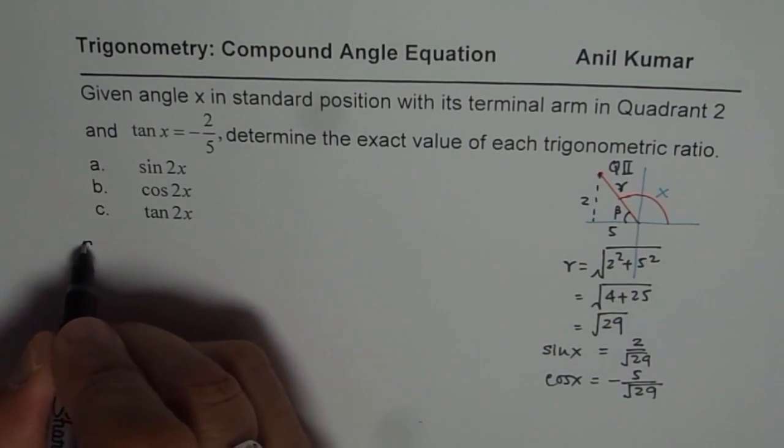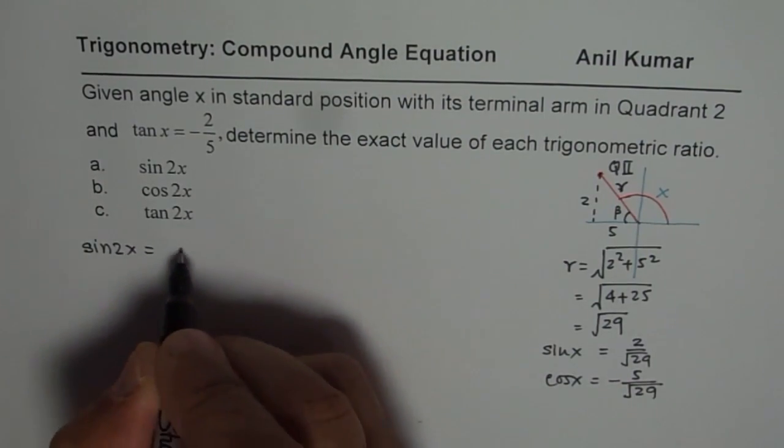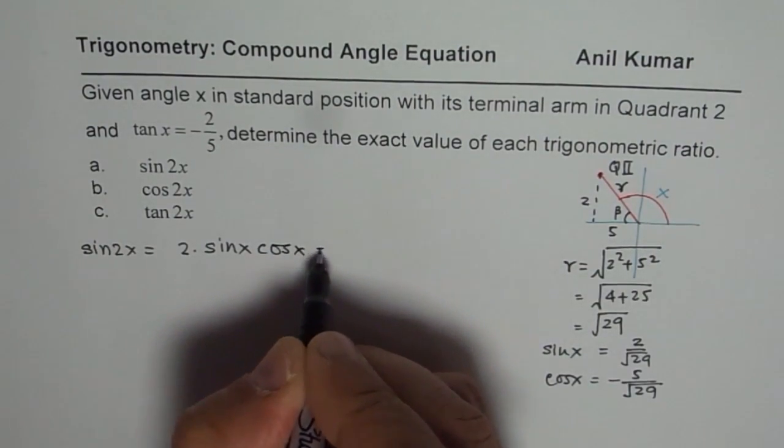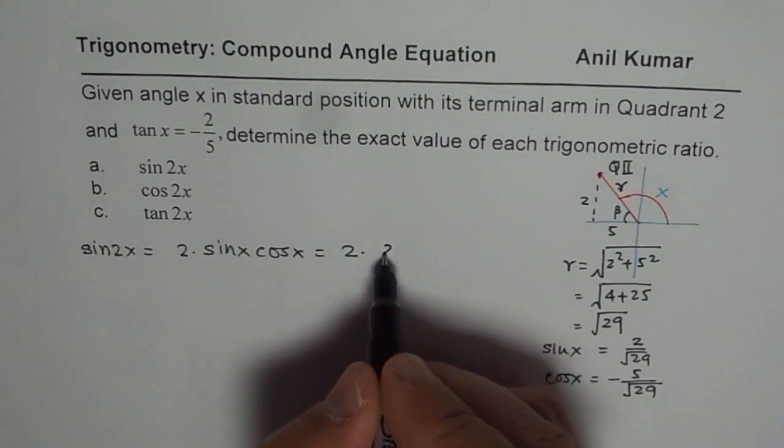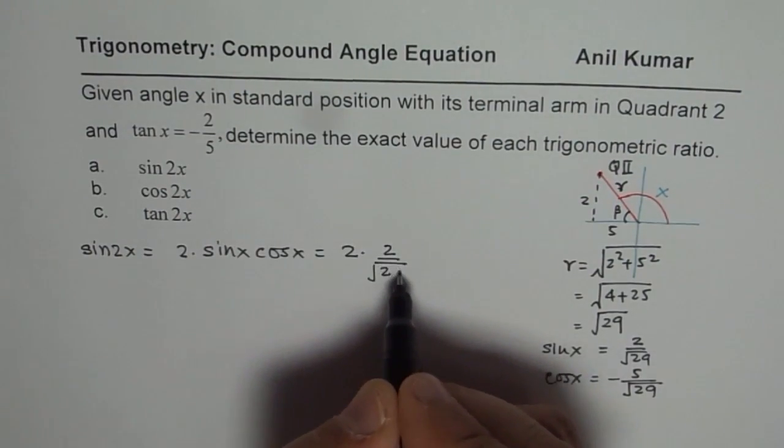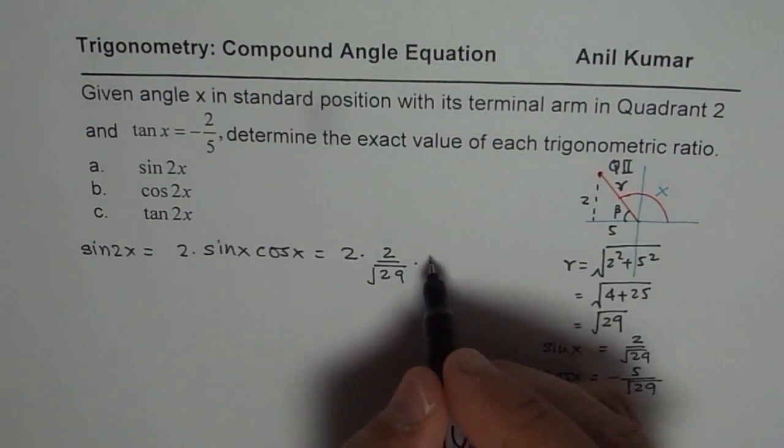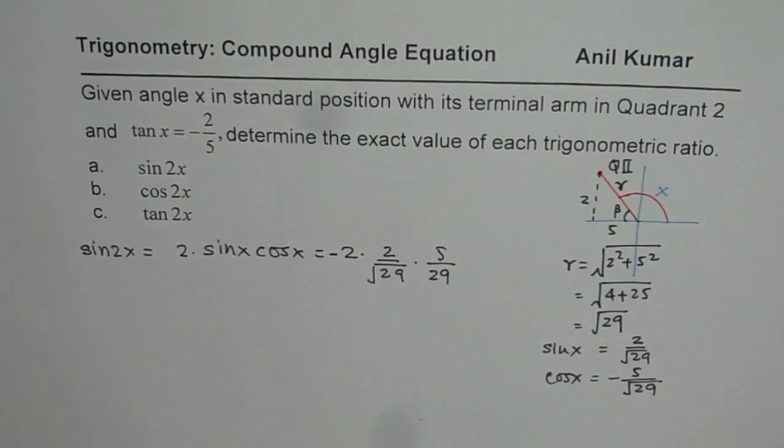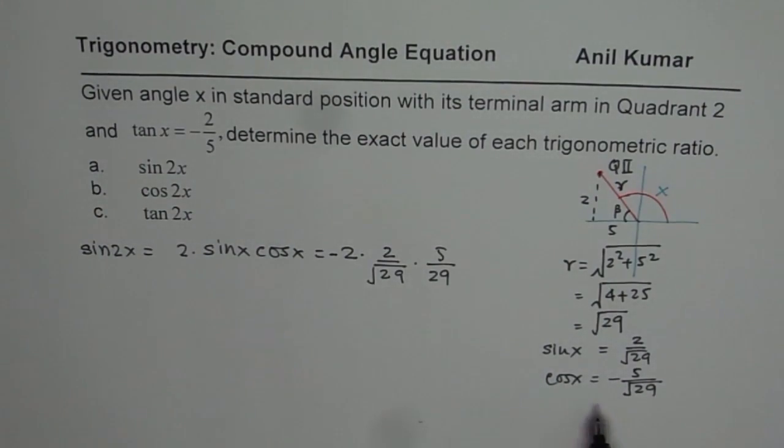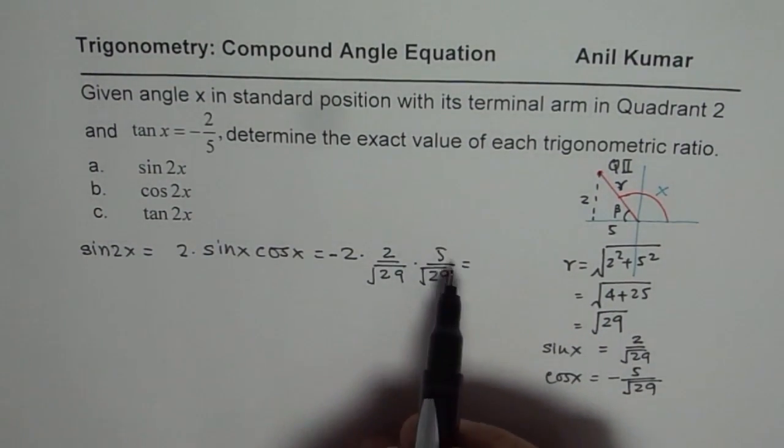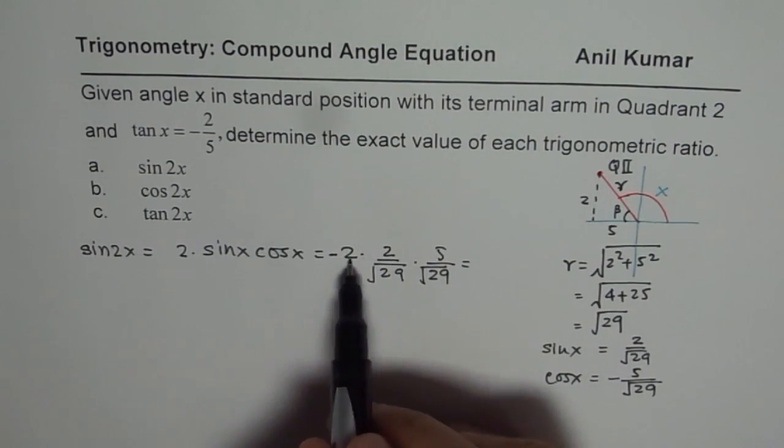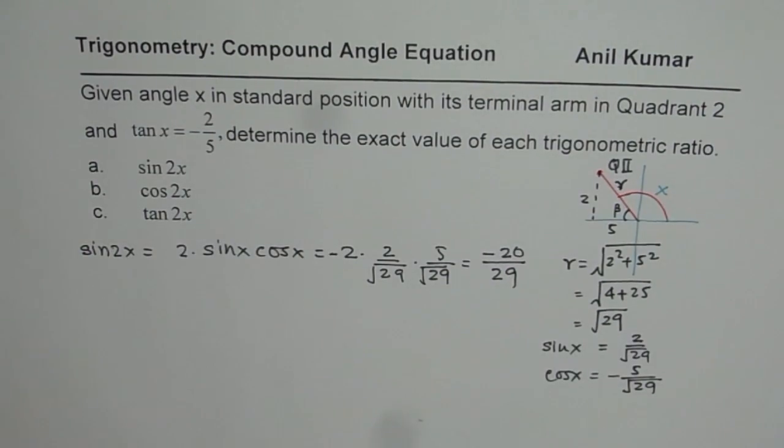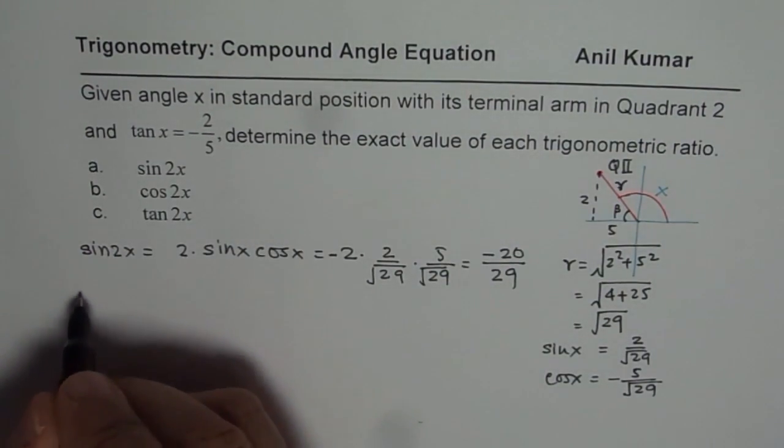For example, sin 2x. Now sin 2x equals 2 times sin x cos x. Which is 2 times sin x is 2 over square root of 29 times cos x is 5 over square root of 29. Since this is negative, the whole thing becomes negative. We substituted minus. And that gives you 5 times 4 is 20, so it is minus 20 over 29. So that is the answer for sin 2x.